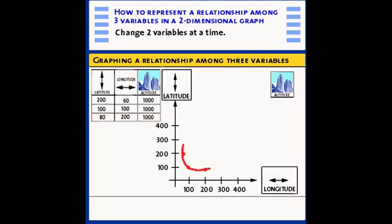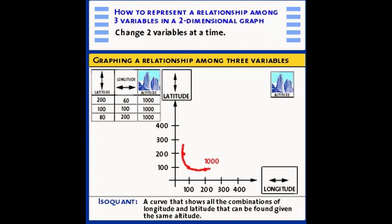This collection of points is sometimes called an isoquant from the word that means same quantities. That is, each of the points on this curve represents a combination of latitude and longitude with a constant altitude of 1,000. Now, this is not the only isoquant that we can draw. We can now change the altitude and find another set of combinations of latitude and longitude that have a different constant altitude.